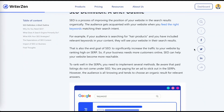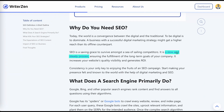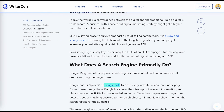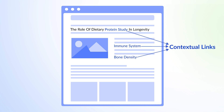Body text links are the most important type of internal link. They provide context for search engines to understand the meaning of the links via the surrounding text as well as anchor text. For example, a link with the anchor text 'protein study' doesn't provide that much context on its own, but when it's in a paragraph where the surrounding text explains the study in detail, search engines use that text to better understand the link. This is why body text links are also called contextual links.